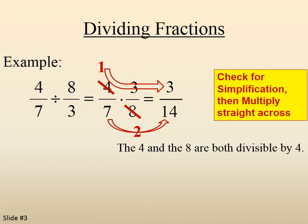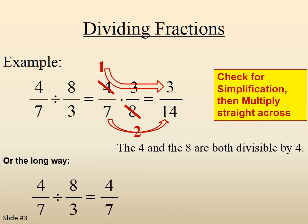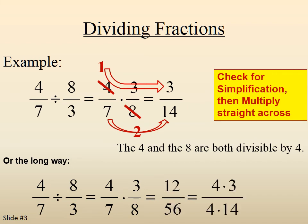So four-sevenths divided by eight-thirds becomes three-fourteenths. Now if we had done it without simplifying early, four-sevenths divided by eight-thirds becomes four-sevenths times three-eighths — same process. Multiply the top, we get twelve. Multiply the bottom, we get fifty-six. And now we have to reduce. We notice that four goes into both, and we are left with three-fourteenths.